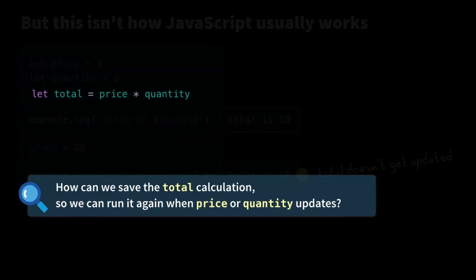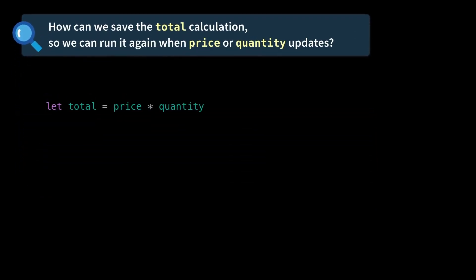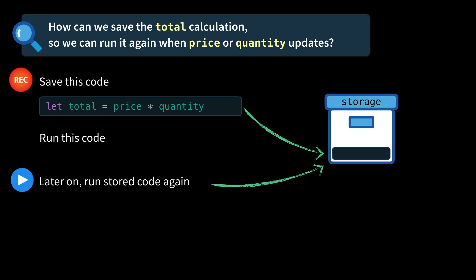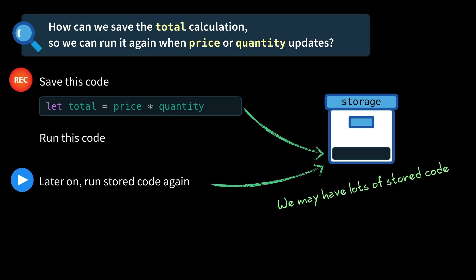How might we implement this? Well, we need some way of saving this code to some sort of storage device like you see here. And whenever you see that red record icon, that means we're saving the code. Then we'll run the code after we've saved it. And later on, we will need to be able to run the stored code again. Notice that little play icon — every time we rerun code, you'll see that play icon. And keep in mind, we may have lots of stored code that needs to get rerun when one variable changes.